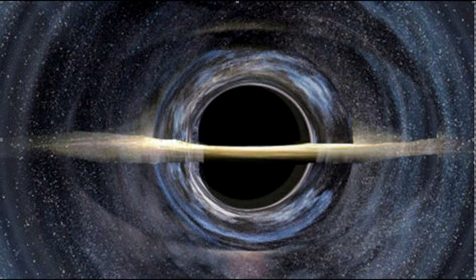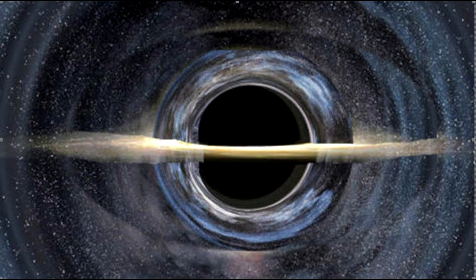This black hole has the remnants of an accretion disk that is no longer feeding the black hole. If the disk were not gravitationally lensed, the black hole should have looked like this.